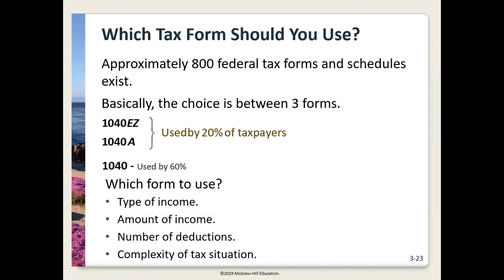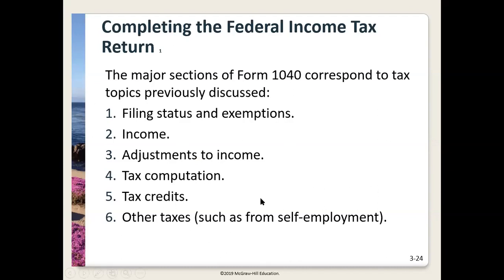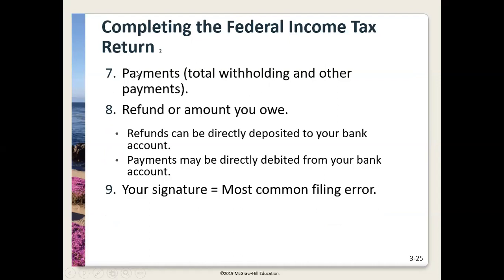There are approximately 800 federal tax forms and schedules, though you won't fill them all out. Pre-2018, we had a 1040, a 1040-EZ, and a 1040-A. The only form we use now is a 1040. The first section covers filing status, then income, then adjustments to income to get to AGI, then you subtract the higher of standard or itemized deductions, then exemptions in the years they applied, arriving at taxable income. Then you calculate income tax, subtract tax credits, add any other taxes, subtract payments, and determine if you get a refund or still owe money.